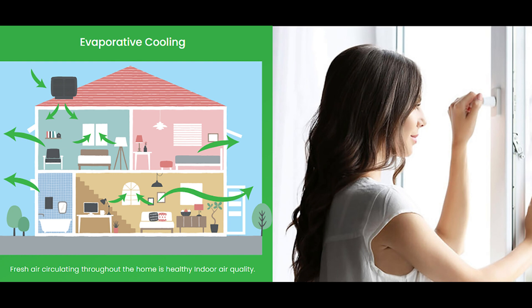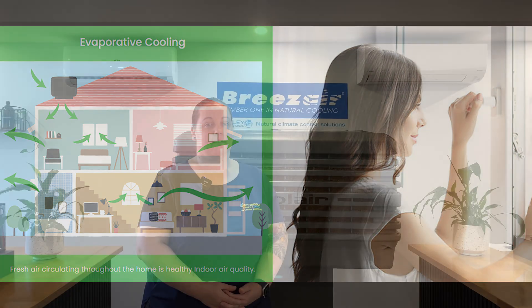To ensure a continuous cool flow of air it is important to have your windows and doors partially open while the evaporative system is operating. One of the key advantages of evaporative cooling is that the system is always drawing new air from outside to be cooled and pushed down into the home. As long as external air conditions are optimal, this allows for a continuous flow of fresh cool air.